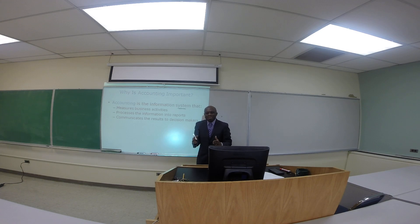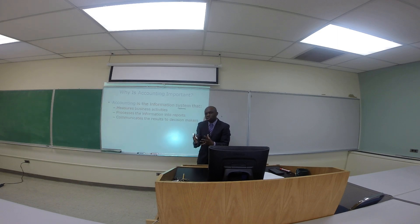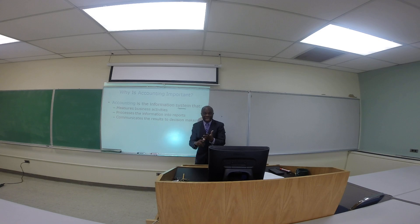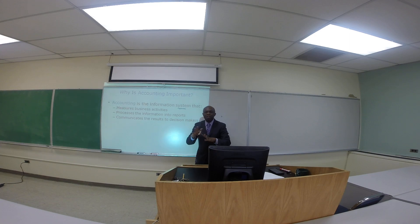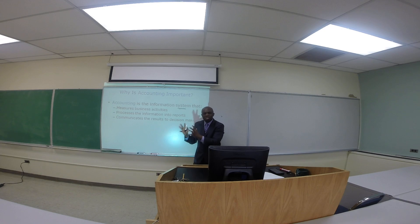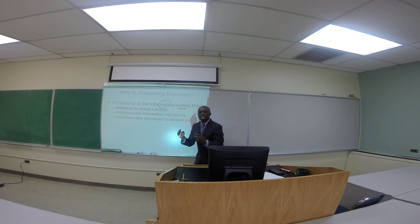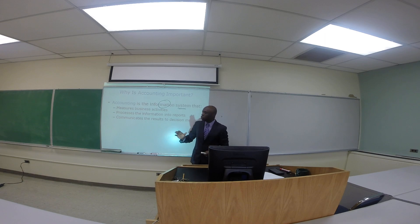So here we are saying that accounting is the information system. We are looking at accounting as a system. What are the related components? Think about a typical accounting department where you have the accountants — that is part of the piece. You have furniture, equipment, computer hardware, computer software, filing cabinets, and accounting records. Put all those pieces together and you have a meaningful whole. The purpose of this accounting system, just like your automobile is to get from point A to point B, is to produce useful information that we use for decision making.